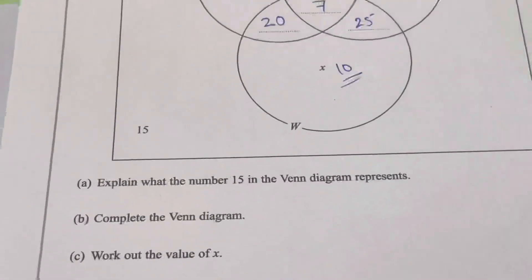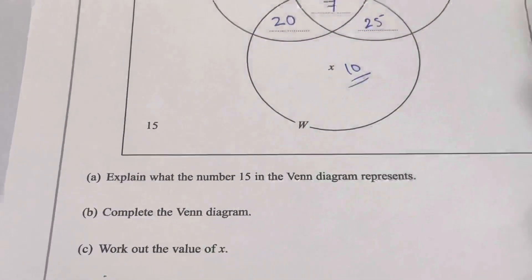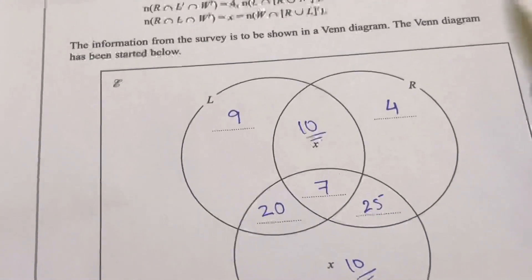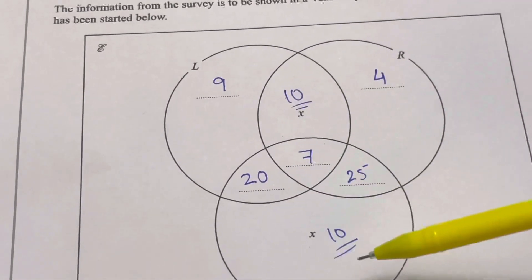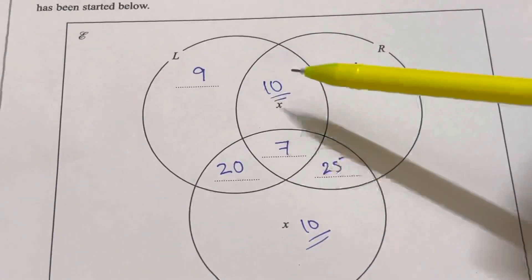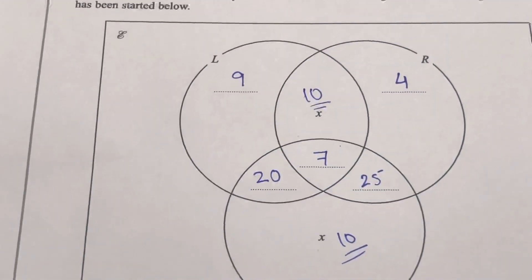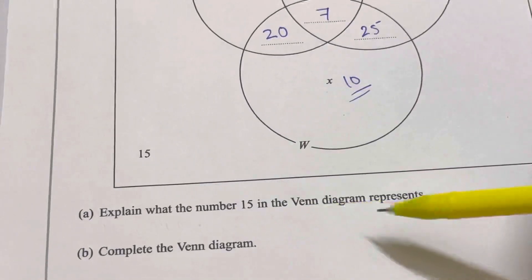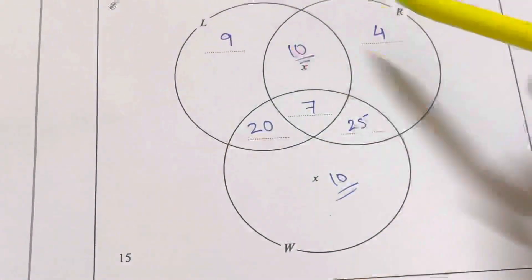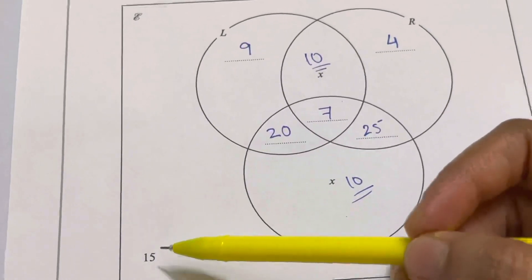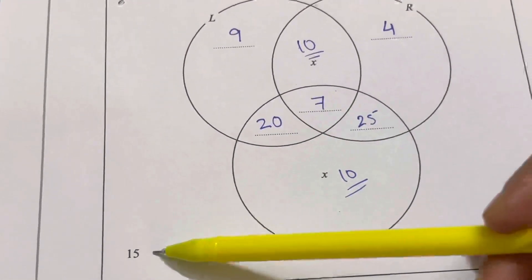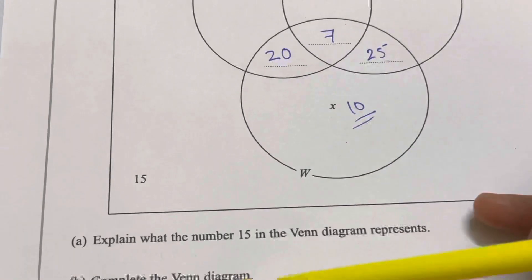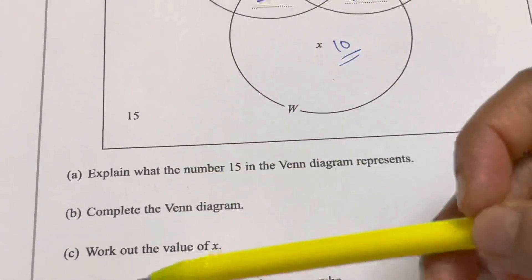The question is to work out the value of x — the unknown region for walking only. We've already found it to be 10, but let's show how. First, the number 15 in the Venn diagram represents the number of people in the survey who do not enjoy any of the three activities — neither music, neither reading, neither walking.